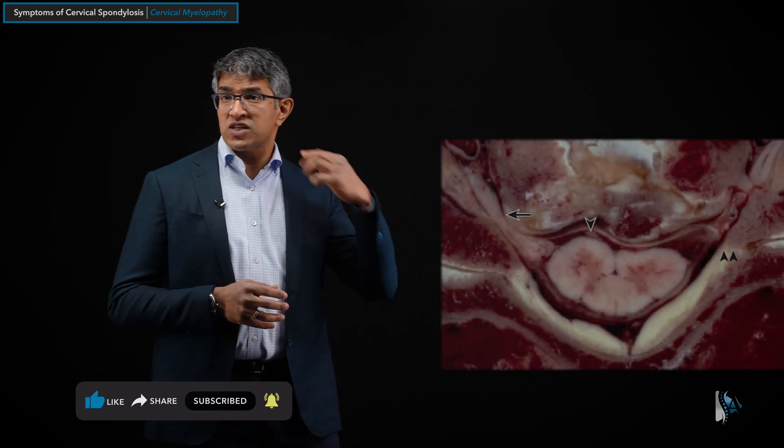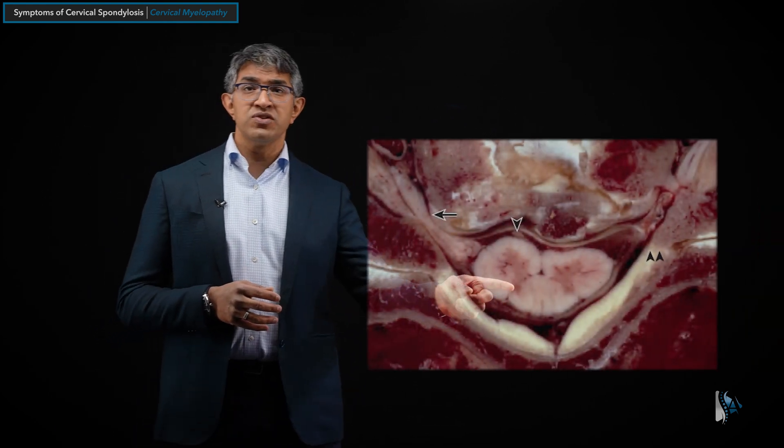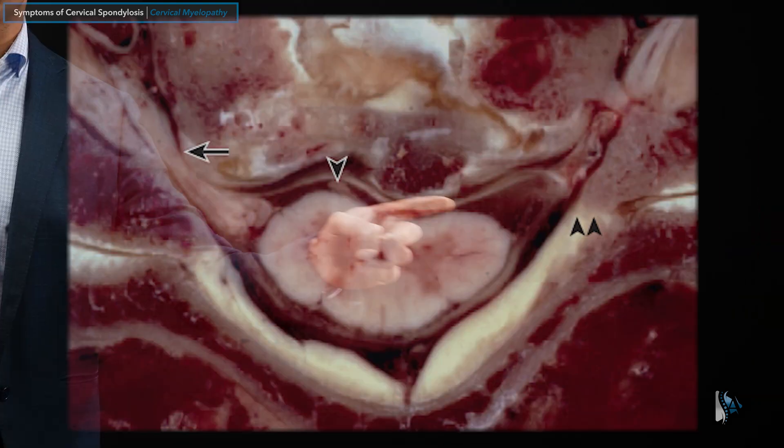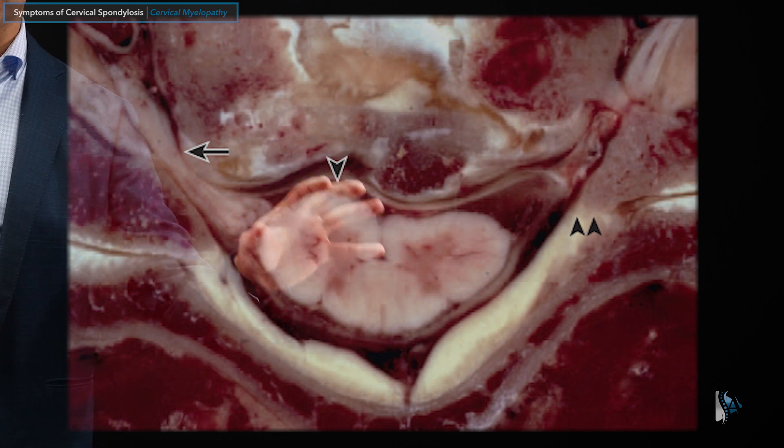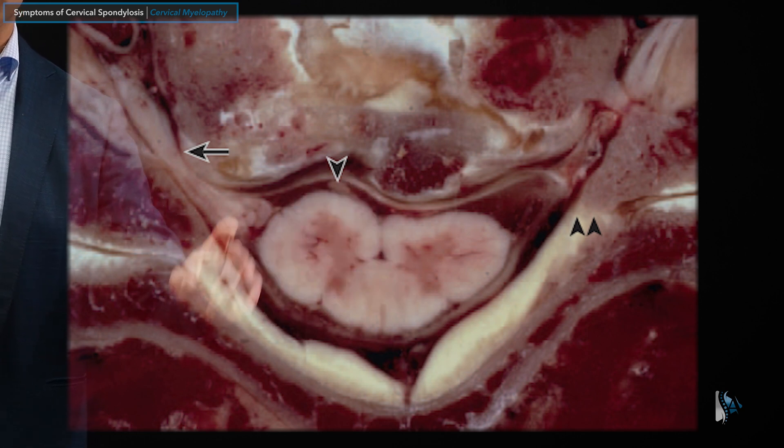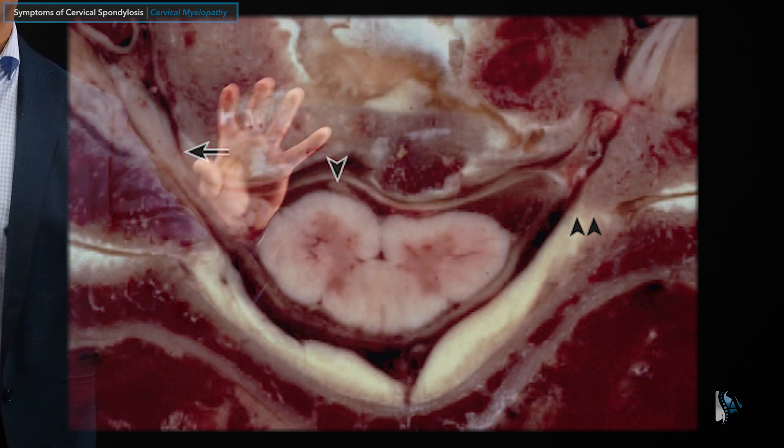The first of the three patterns we're going to talk about is cervical myelopathy. Cervical myelopathy comes from spinal cord compression and spinal cord dysfunction. This is an axial slice and you can see here the spinal cord, so we're talking about the spinal cord as it relates to the structures around it.